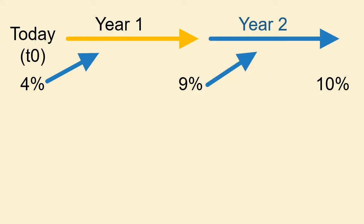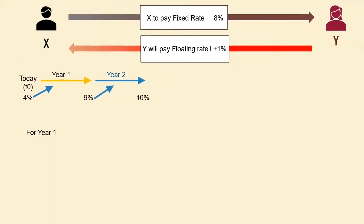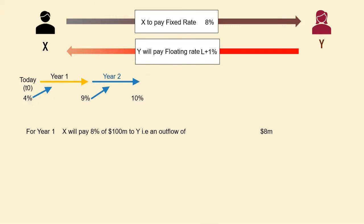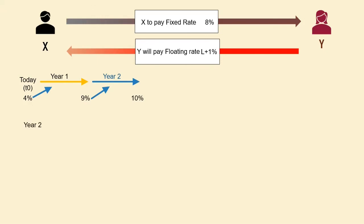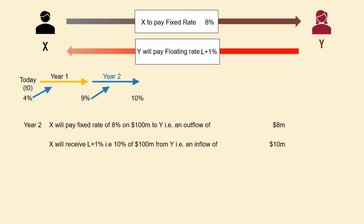Similarly, if interest is payable every 3 months, the 3-month LIBOR will be determined at the beginning of each 3-month period. In our example, for year 1, X will pay 8% on $100 million to Y, and since LIBOR for year 1 has been set at 4%, X will receive LIBOR plus 1, that is 5%, from Y. In essence, X pays 8% and receives 5%, resulting in a net payout of 3% by X. For year 2, when LIBOR is determined at 9%, X will pay 8% to Y and in turn will receive LIBOR plus 1, that is 10%, from Y — resulting in a net inflow of 2% to X, and so on.